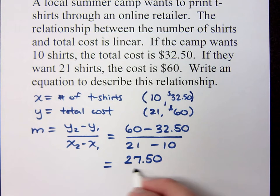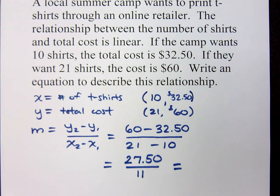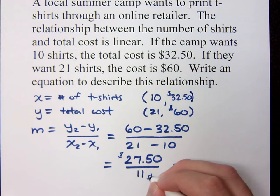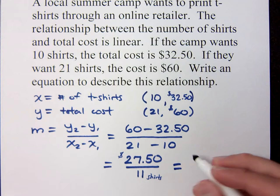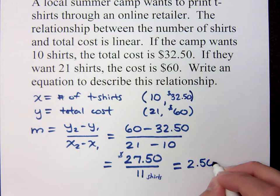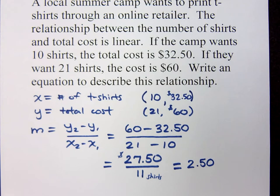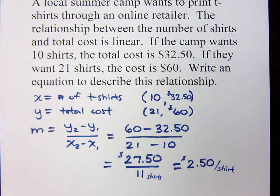$60 minus $32.50 is $27.50, and $21 minus $10 is $11. When you do this division — $27.50 divided by $11 — you come up with $2.50. That's $2.50 per shirt, which makes sense: this is cost over number of shirts, so it's the unit price. But that's really my slope — slope is a rate.